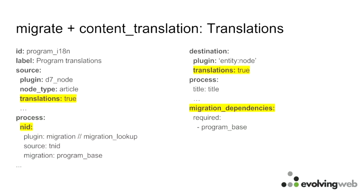After running both migrations, you get all the base nodes with all translations attached. You become a happy programmer having migrated everything from Drupal 7 to Drupal 8. Regarding the entity translation module in Drupal 7: unlike content translation where each translation is a separate node, entity translation stores all translations under a single entity ID. In the `field_data` or `node_field_data` tables, there's a registry — the `entity_translation` table — tracking all translations with their entity type, entity ID, language, and source language.